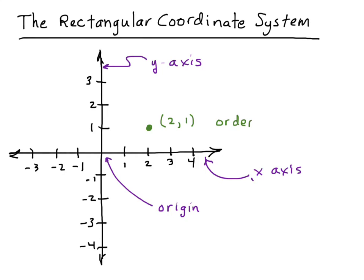So if we have an ordered pair like (2,1), that's suggesting that 2 and 1 have some sort of relationship, and we will plot that in a way that illustrates that relationship on this graph. The first number in the ordered pair we designate as the x-coordinate. The second number we designate as the y-coordinate.